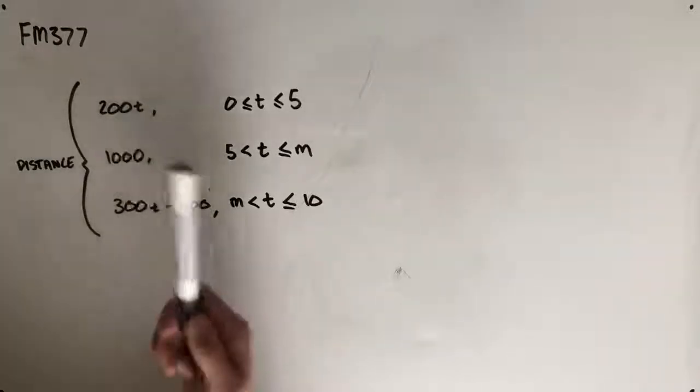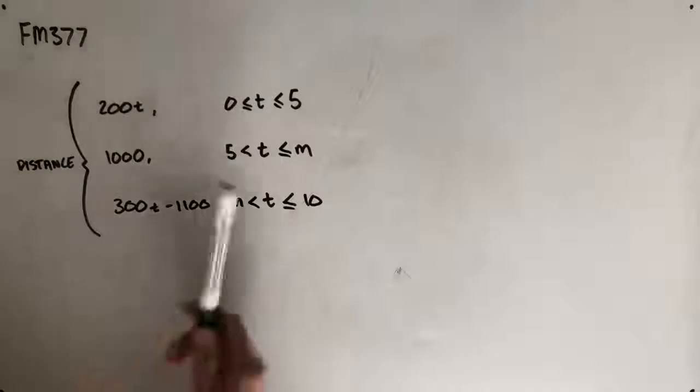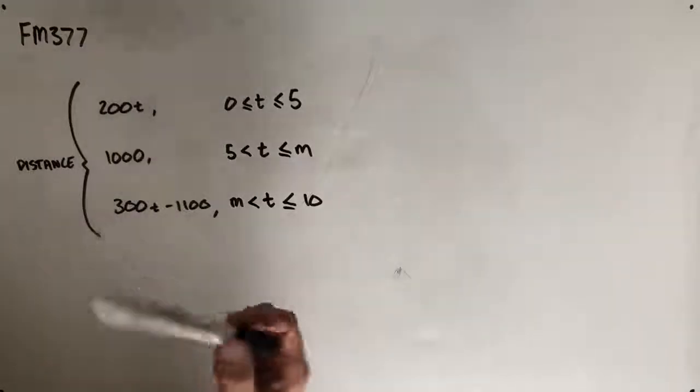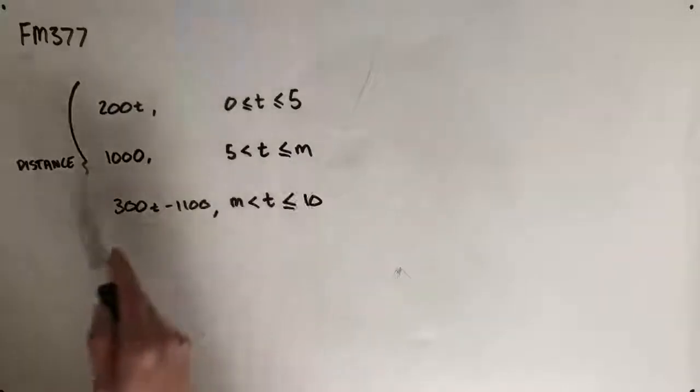So with each t increasing by, if we had a value of 1 for t, so 1 minute in, her distance would be 200. A value of 2 for t would leave a distance of 400, and so on and so forth. So after 5 minutes, she is 1,000 meters away from home.